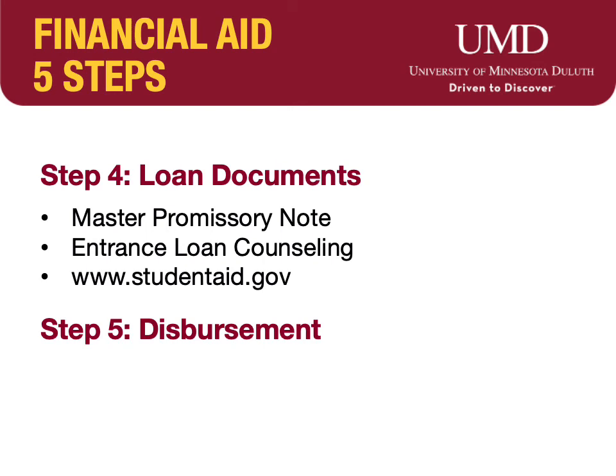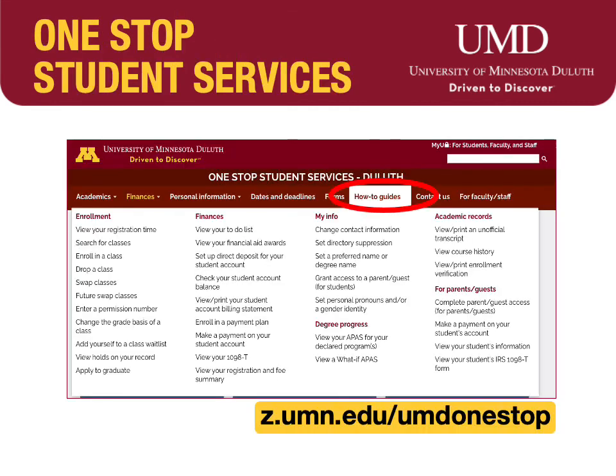Step five is Disbursement. If you have a Federal Direct Student Loan, once the loan is disbursed — meaning it pays to your student account — step five will be checked off with a green circle.